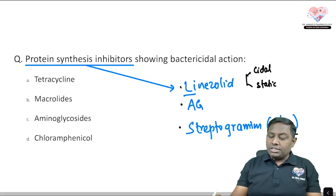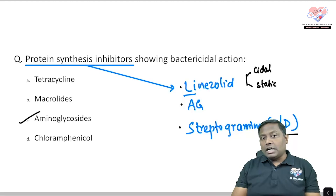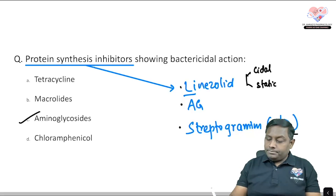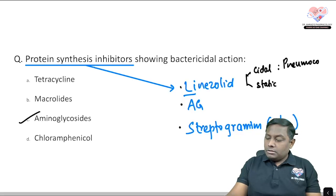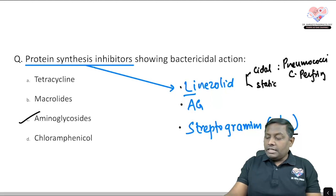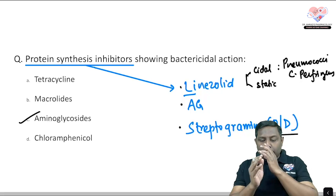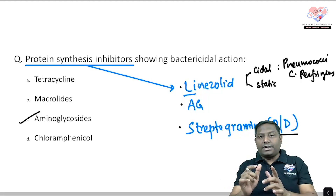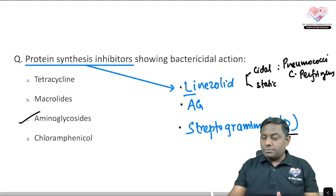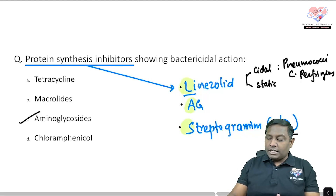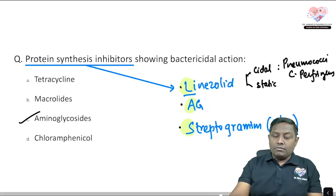To summarize protein synthesis inhibitors: most are bacteriostatic, but linezolid, aminoglycosides, and streptogramins are bactericidal. Linezolid shows dual property — mostly bactericidal but bacteriostatic against some pneumococci and Clostridium perfringens. Chloramphenicol is also a protein synthesis inhibitor and shows only bacteriostatic property.